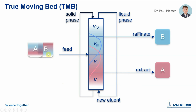The mobile phase flows from zone 1 towards zone 4, from bottom to top, and the solid phase from zone 4 to zone 1. The feed — in this example a mixture of two components A and B — is continuously added between zones 2 and 3. The more adsorbed component A moves with the solid phase downwards and can be removed as extract between zones 1 and 2. The weaker adsorbing component B is transported with the mobile phase upwards towards zone 4 and can be removed as raffinate between zones 3 and 4.